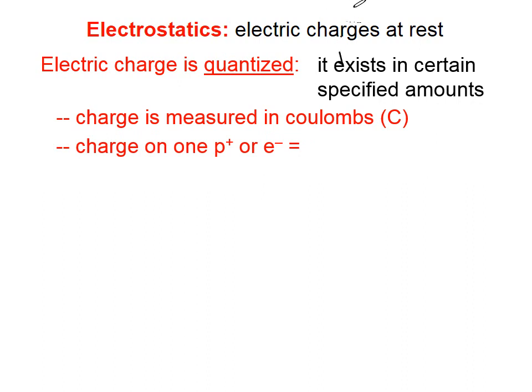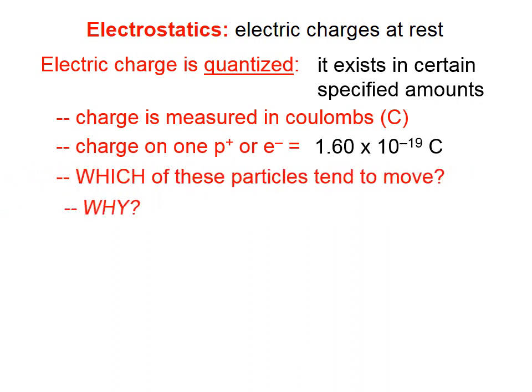Charge is measured in coulombs, which is symbolized by a capital C. The charge on one proton or one electron is 1.60 times 10 to the negative 19th coulombs. We've arbitrarily assigned the proton to have a positive charge and the electron to have a negative charge, but the magnitude of those charges is 1.6 times 10 to the negative 19th coulombs.